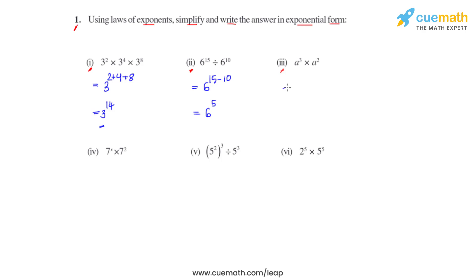The third bit again uses the product law of exponents. We keep the same base, which is a, and add the powers: 3 plus 2, giving us the answer a raised to 5.